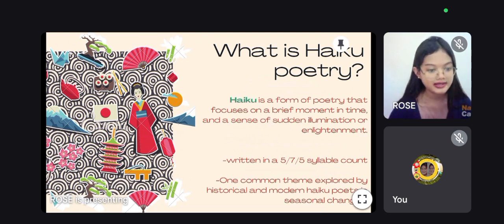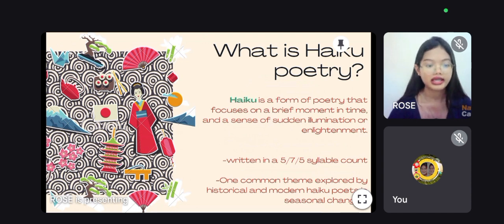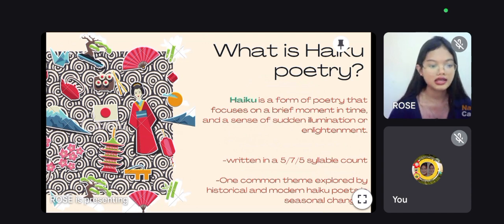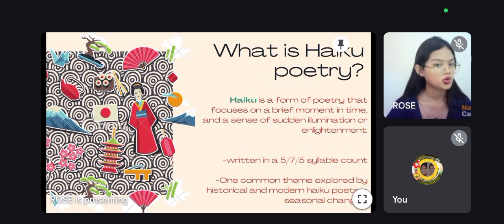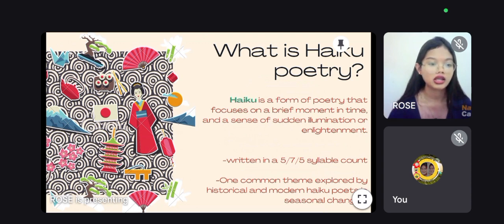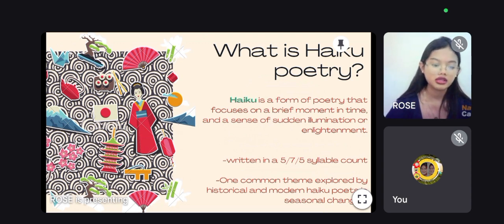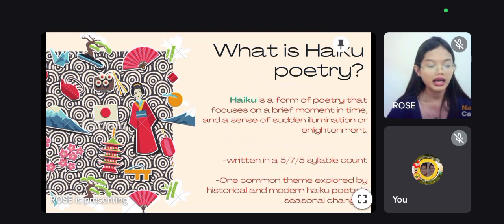The traditional Japanese Haiku is a three-line form with seventeen syllables written in a five-seven-five syllable count. It often focuses on images from nature, and Haiku emphasizes the simplicity, the intensity, and the directness of expression. Unlike other poems, Haikus usually don't rhyme. Every poem has its own uniqueness, but Haiku is different from other poems.